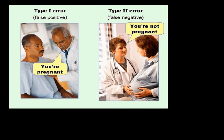In the second picture, the doctor is accepting the null hypothesis of no pregnancy while the alternative is in fact true. As you can see, the lady is obviously pregnant, but the doctor is committing a type 2 error by not rejecting the null hypothesis, while in fact the alternative hypothesis is true. So this is a great way to remember what a type 1 error and what a type 2 error actually is.